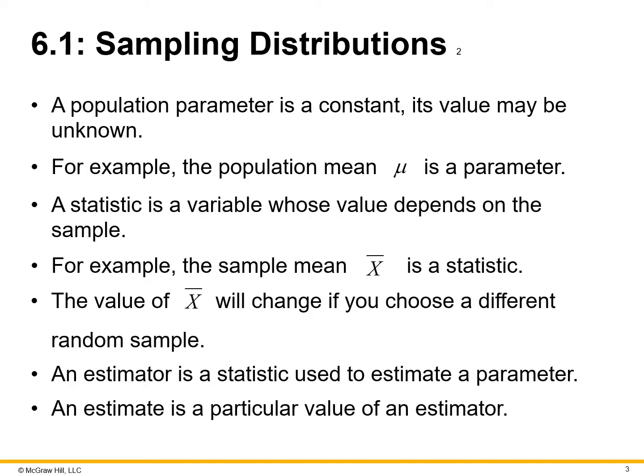When taking a look at sampling distributions, keep in mind you're trying to find the number of potential distributions of a sample. A population parameter is a constant — a value that may be unknown. For example, the population mean, represented by the symbol μ (mu), is a parameter. A statistic is a variable whose value depends on the sample. For example, the sample mean X-bar is a statistic, and its value will change if you choose a different random sample.